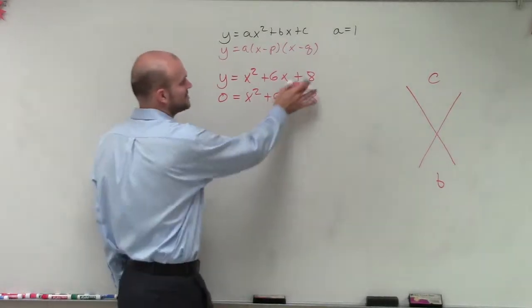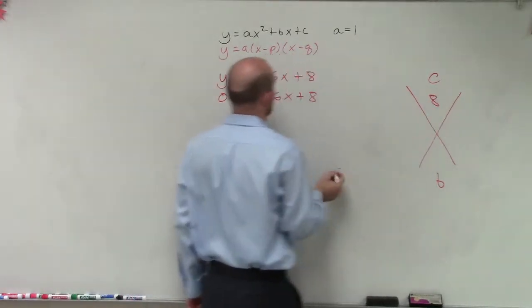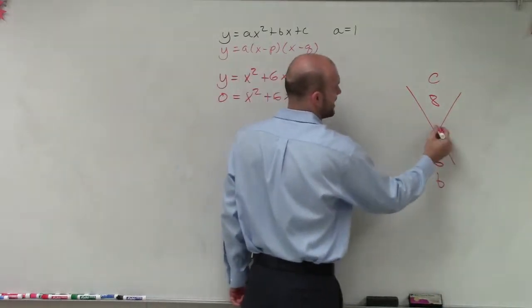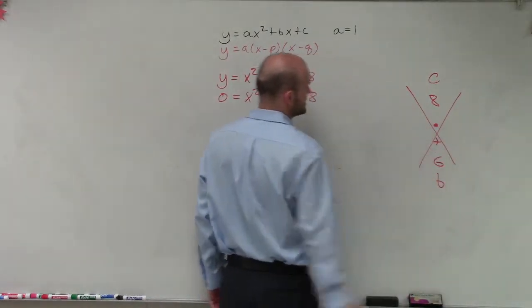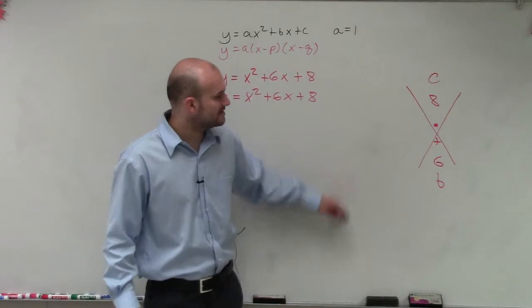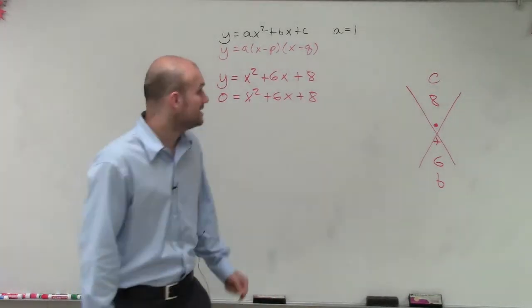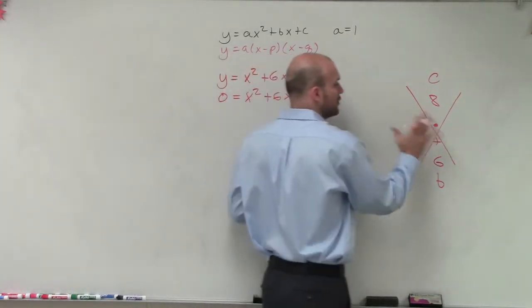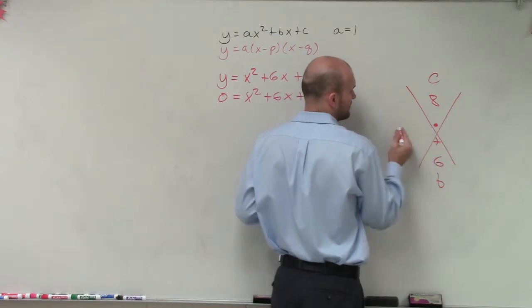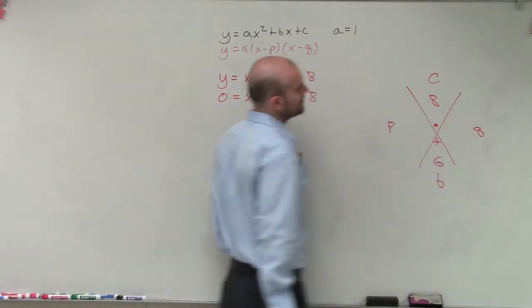So we have our c and our b. Let's label what c and b are. Our c is 8, and our b is 6. Then I put a multiplication symbol and an addition symbol below. This is going to tell me to find my p and q, those are going to be my two values. Maybe I'll write p and q right here.